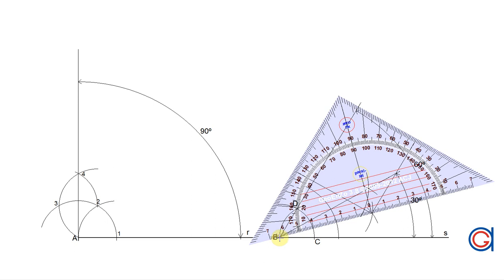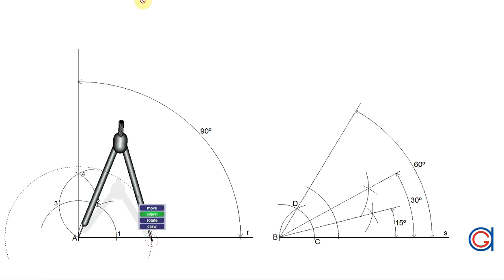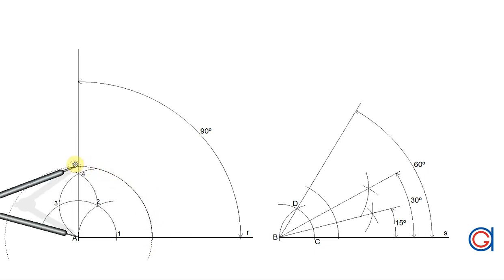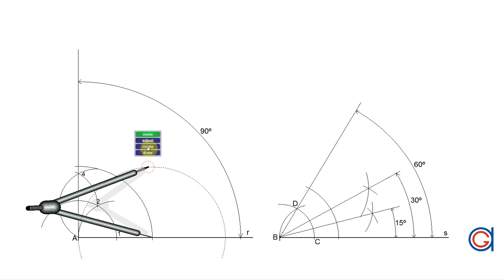The next step is to draw a 45 degree angle by working out the angular bisector of the 90 degree angle. To do this we set our compass to whatever radius, slightly longer than half, as can be seen here, and setting on the point A we scribe an arc until it cuts both lines as shown. These two points are going to be the center points of the new arcs that will intersect each other at a new point which we will join to A to form our 45 degree angle.